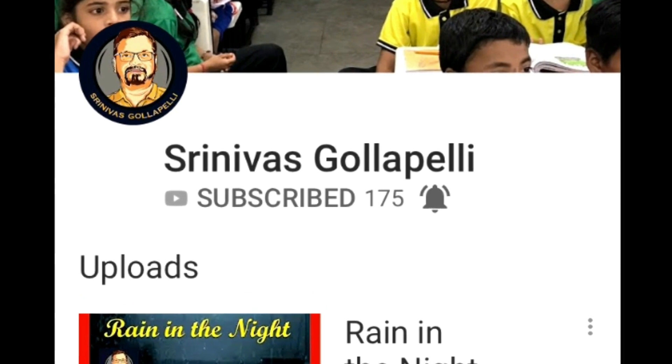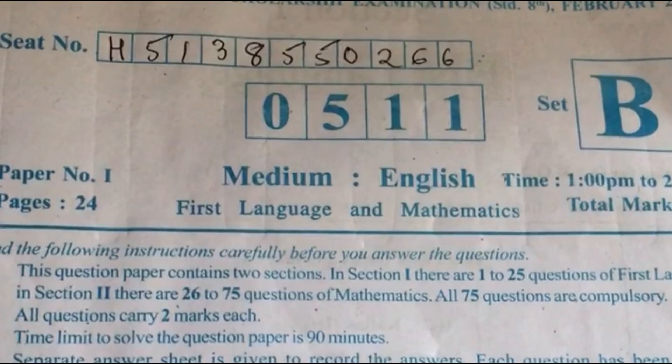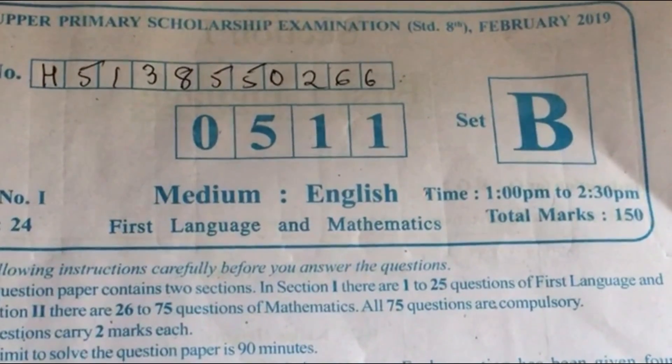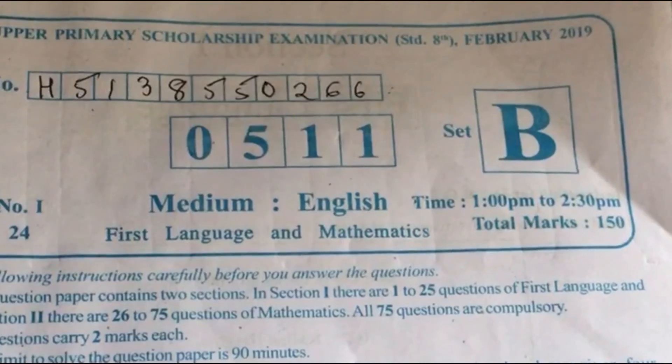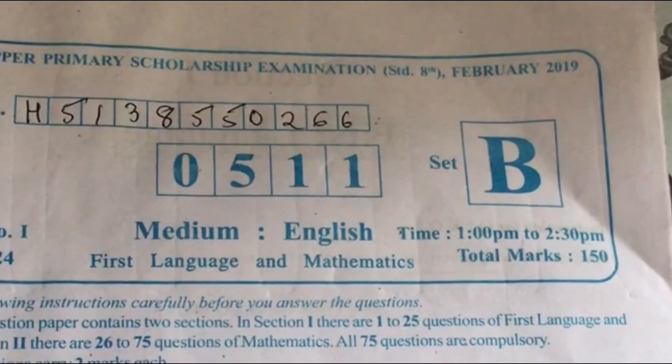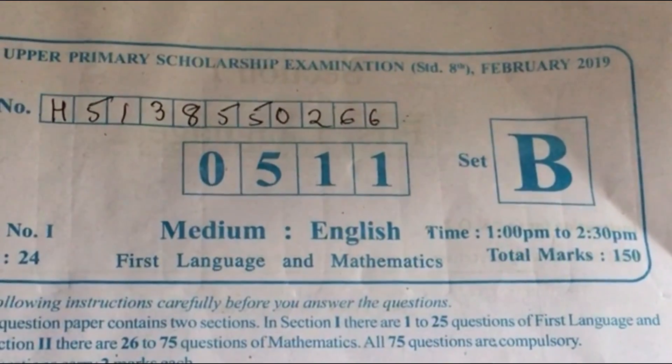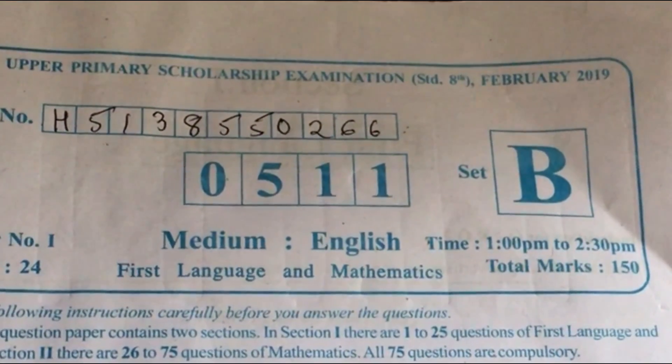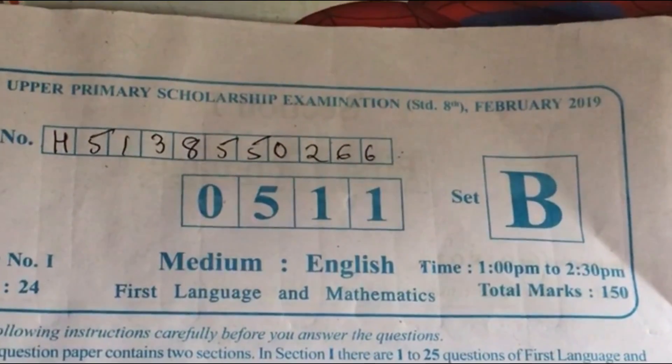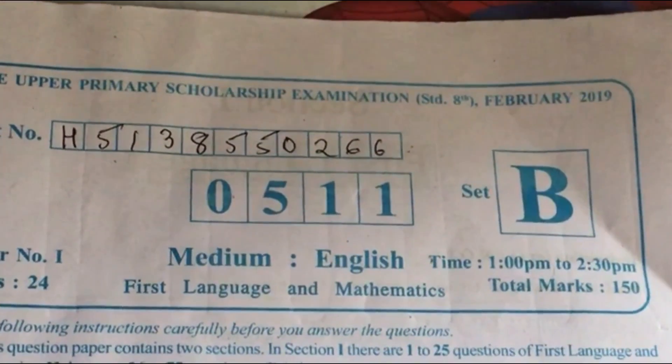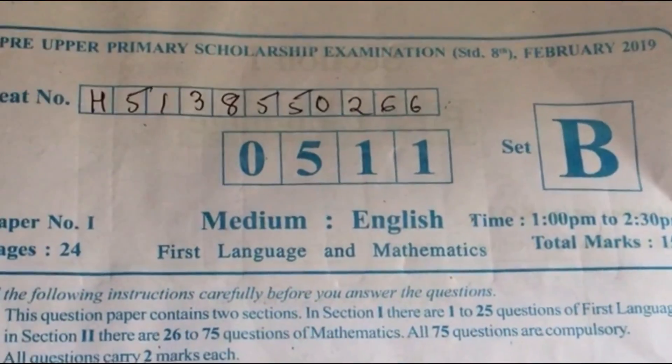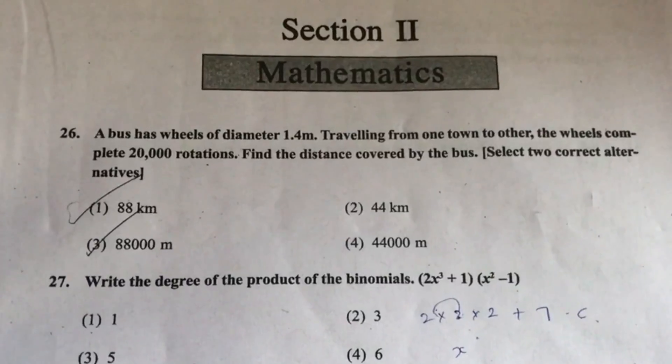Hello friends, welcome to my channel. Today we will follow this paper in Standard 8 English medium math scholarship paper. I have Set A and Set B. If you have a different set, then there are questions to save and the order changes, so if you look at one set A, B, C, D, the answers you can find and verify your marks.